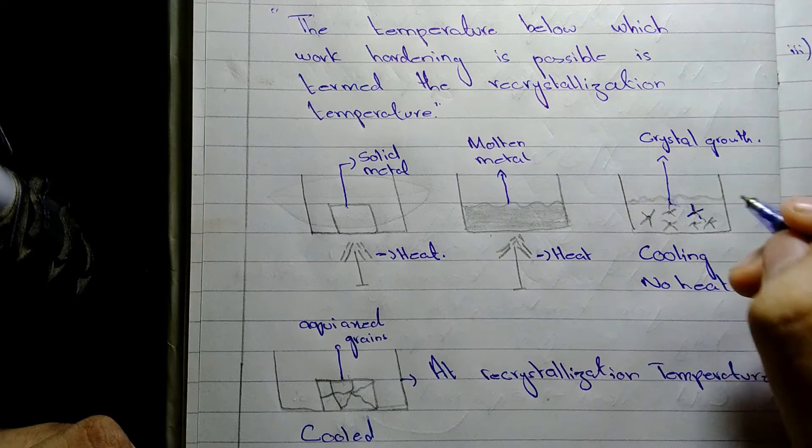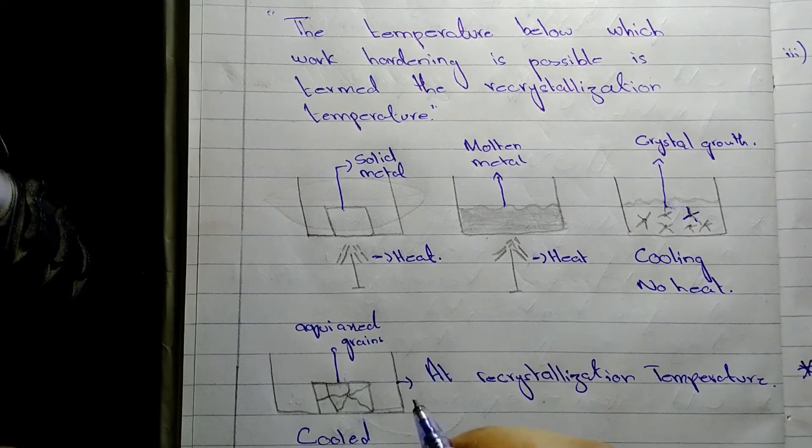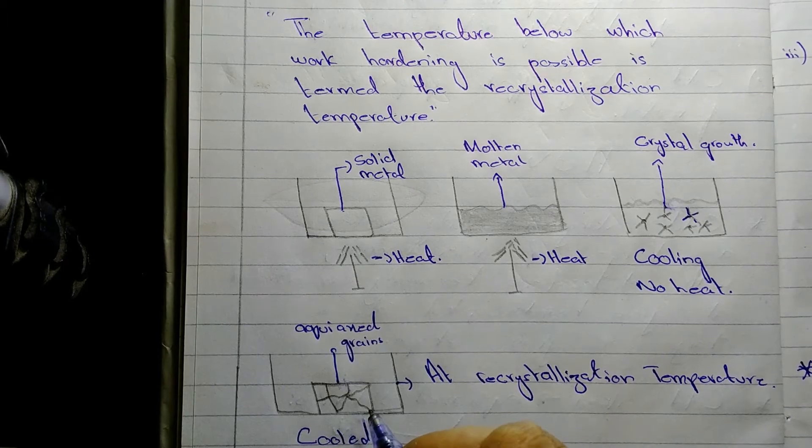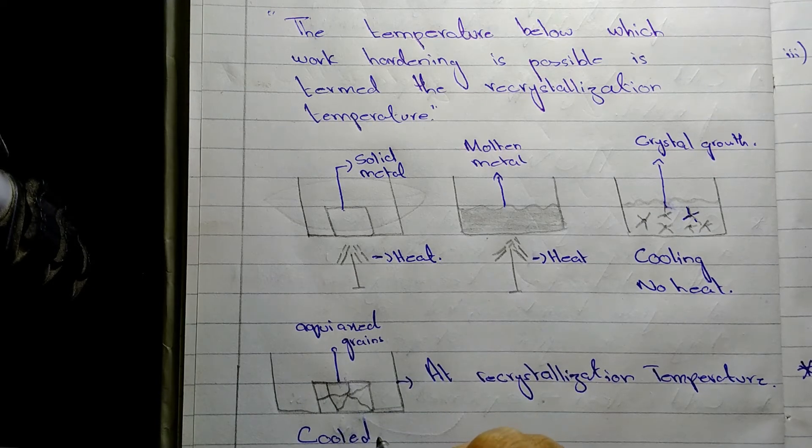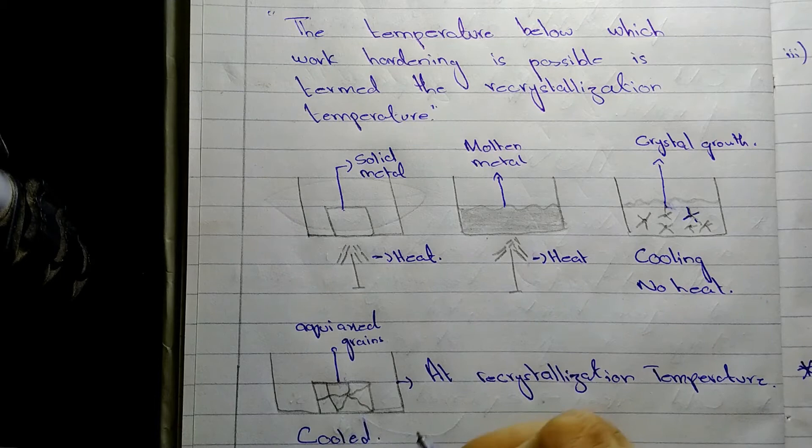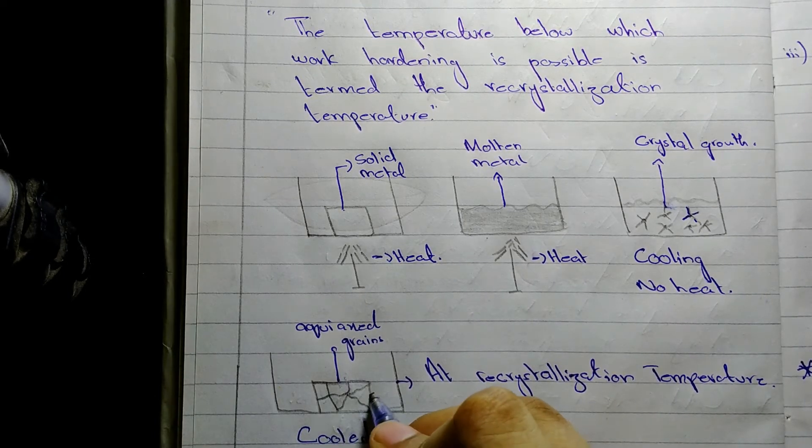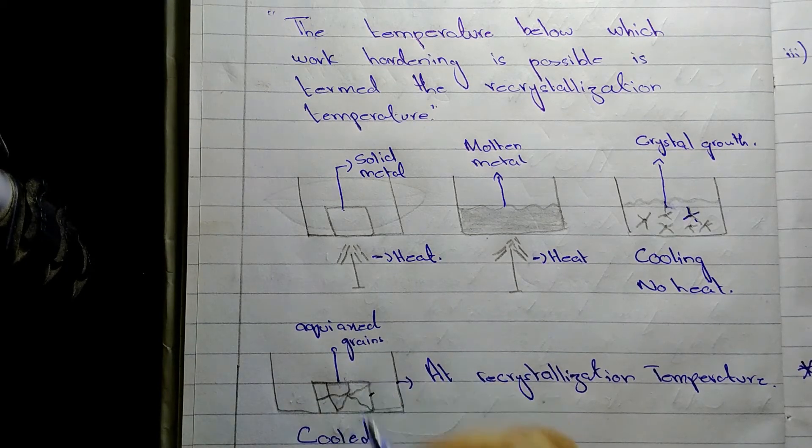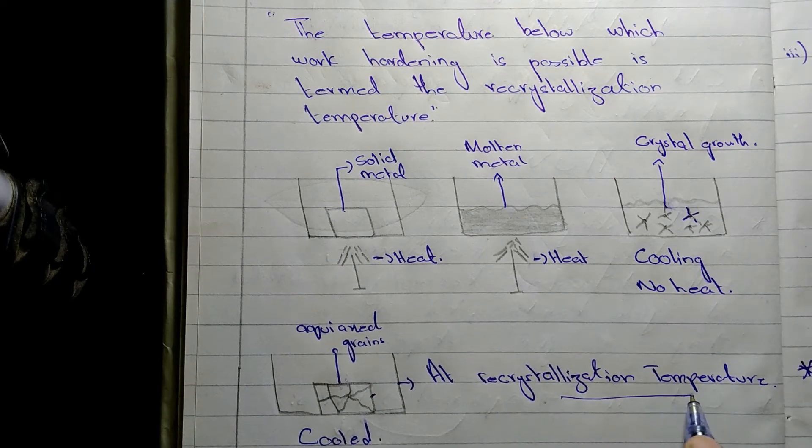So now that crystal growth, in the last figure crystal growth continues and it finally forms an equiaxed structure of a metal block when the metal is cooled at certain temperature. Now, this temperature at which crystal growth is completed and we get the equiaxed grain structure, this particular temperature at which we get this is recrystallization temperature.